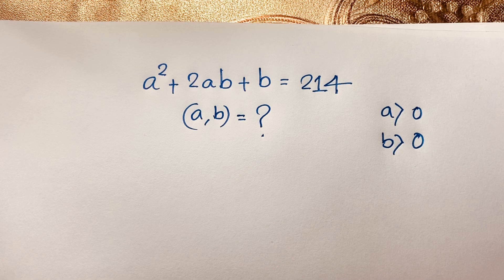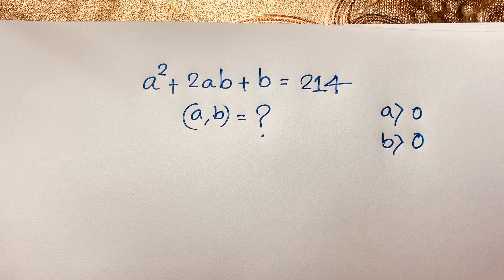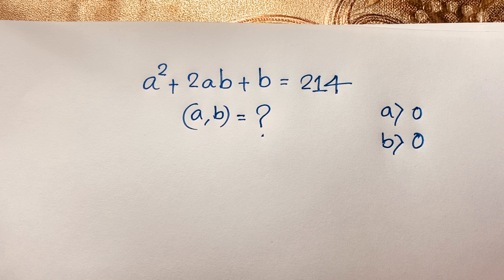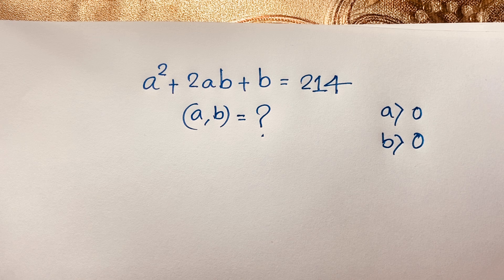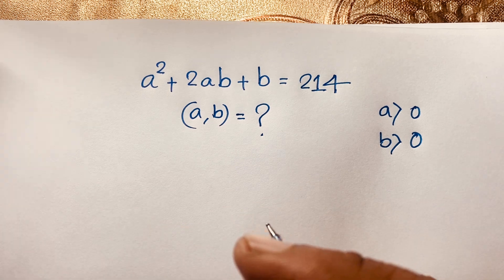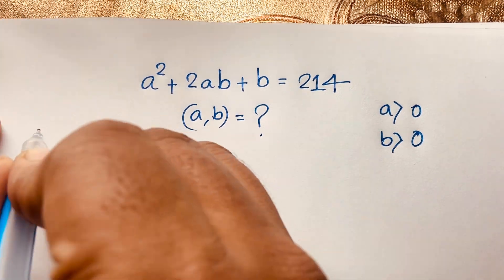Hello everyone. In this video we have solved a nice math problem: a squared plus 2ab plus b is equal to 214, where a and b is equal to what? Here a is greater than 0, b is greater than 0, and a and b are positive integers. Let's start the solution.